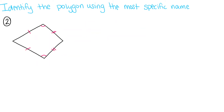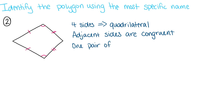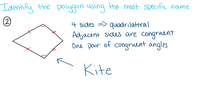Next, we have another polygon that has four sides, so that means it's a type of quadrilateral. Adjacent sides are congruent — adjacent just means next to. So the sides that are next to each other: the two sides on top and the two sides on the bottom are next to each other, which means they are congruent sides. We see our adjacent sides are congruent, and we have one pair of congruent angles that are opposite each other. So that means this must be a kite.